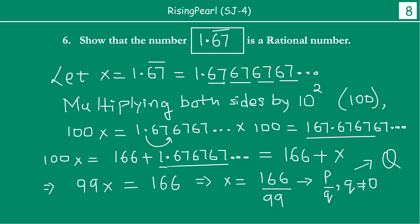So we have seen this time how we were given a decimal with digits recurring, 1.676767..., and we proved how that decimal number is actually a rational number. We proved that this number is equal to 166 by 99. Basically, it is of the form P by Q, where P and Q are integers and Q is not equal to 0.